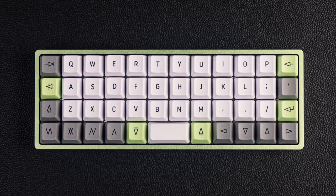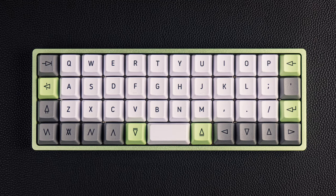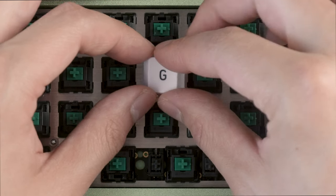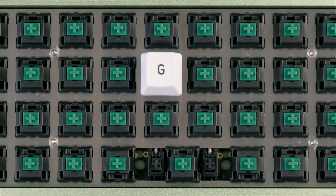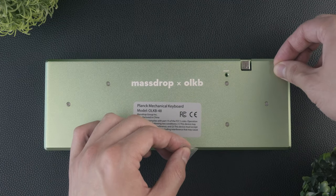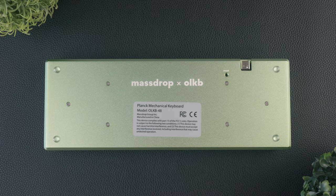It's time to add keycaps. Follow this photo for the default layout. To insert a key, line up the center and press down evenly. The final step is to add the rubber feet. Peel and apply them to the four corners of your keyboard.